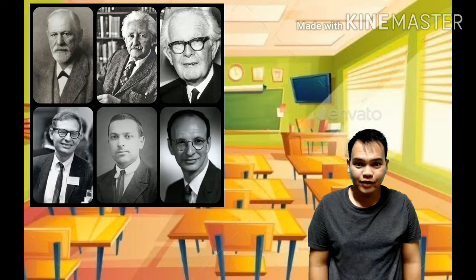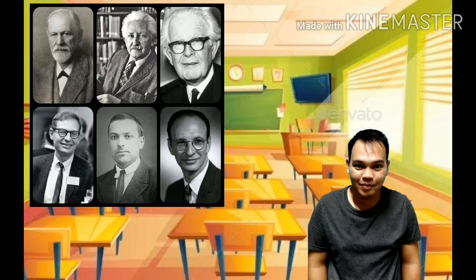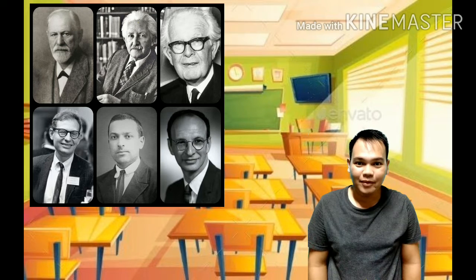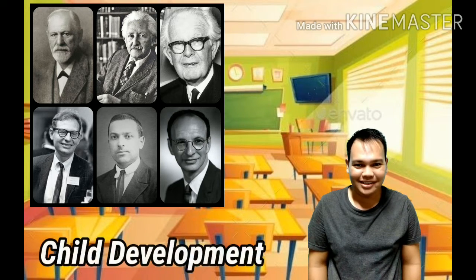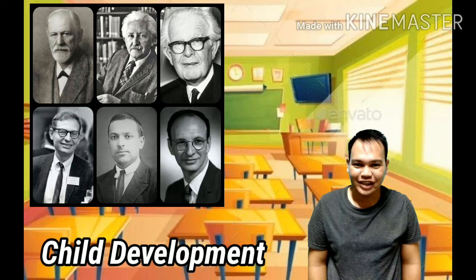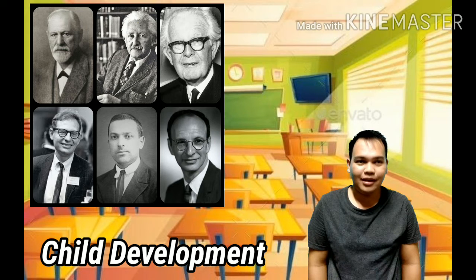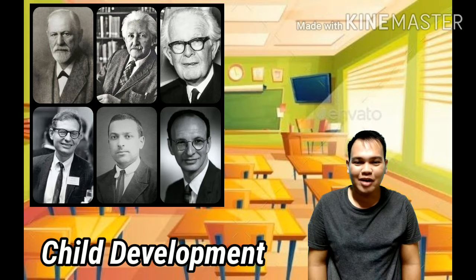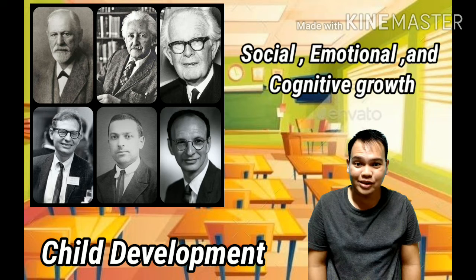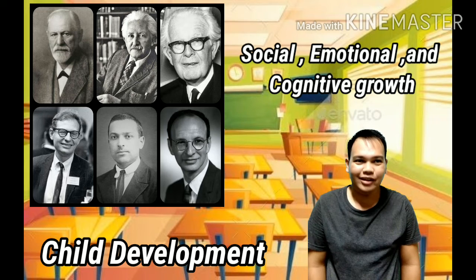Are you familiar with the people in the picture? These people have different theories about child development. Child development theories focus on explaining how people grow over the course of childhood. Such theories cover the various aspects of development, including social, emotional, and cognitive growth.